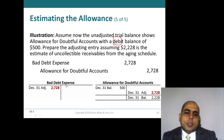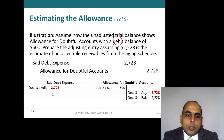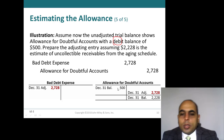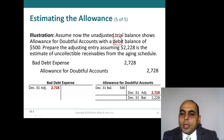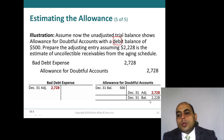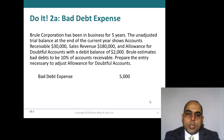Looking at the T-account: bad debt expense is debited by $2,728. Allowance for doubtful accounts had a debit balance of $500, then is credited by $2,728, so the ending balance is a credit of $2,228 — exactly the target amount from the aging schedule.